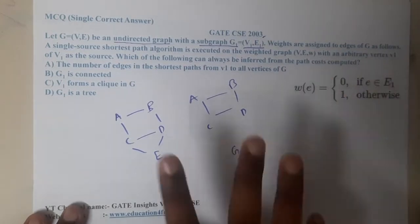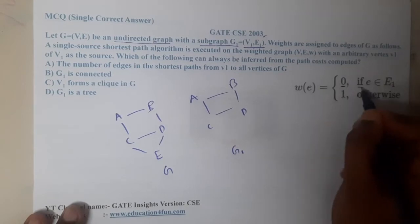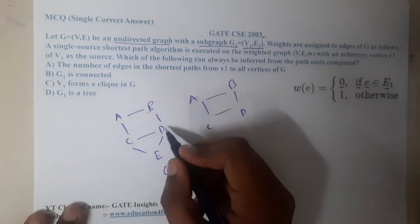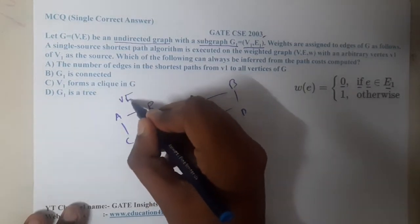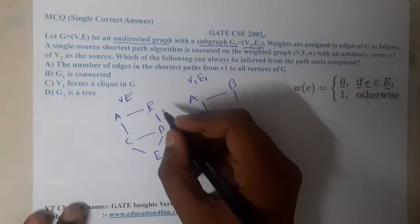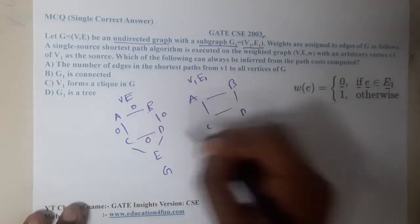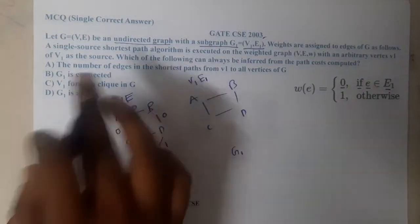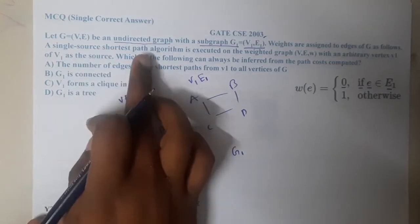Now for the weight assignment on G: if an edge e belongs to E1, the weight will be 0; otherwise it will be 1. So edges inside G1 get weight 0, and all remaining edges get weight 1.